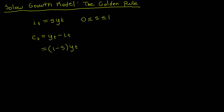If you only save, that implies you're choosing a savings rate of S equals one. Looking at our consumption equation, if S equals one, consumption for any period in time is going to be equal to zero. So the steady state level of consumption per capita — denoted with a star — must also be equal to zero. That makes sense because you are only saving, which means you have nothing left over to consume.